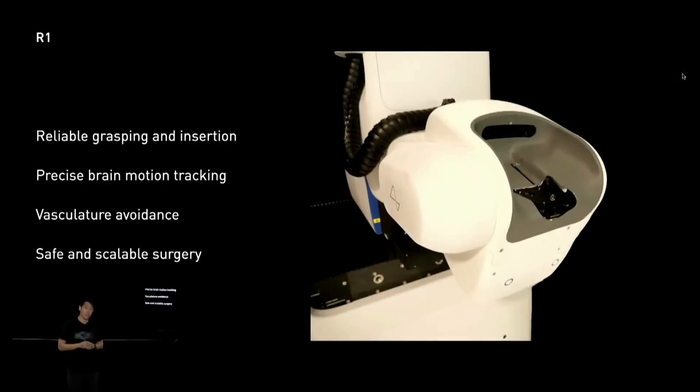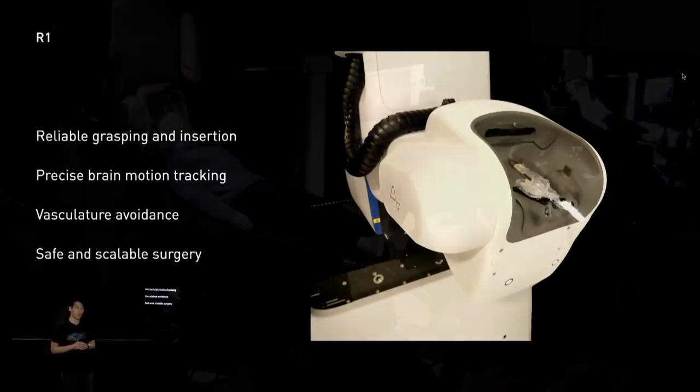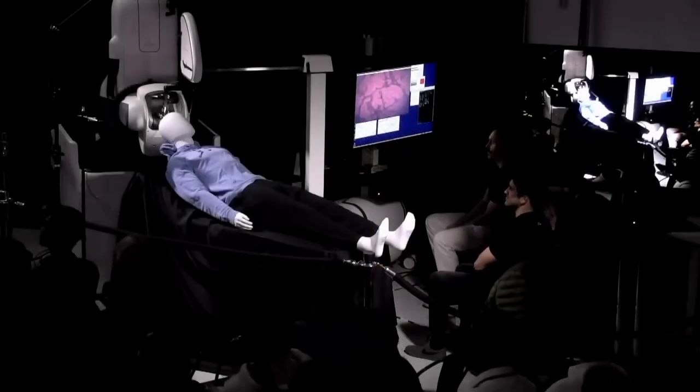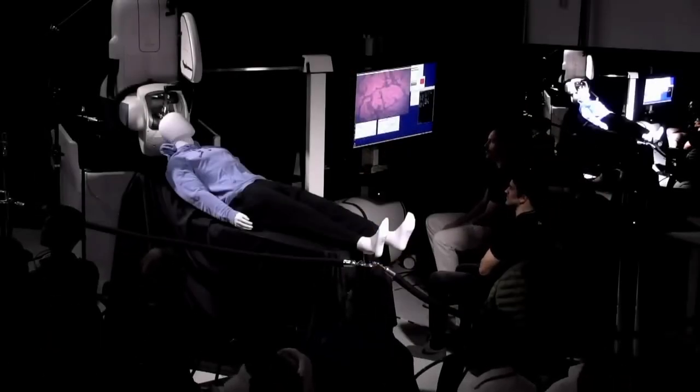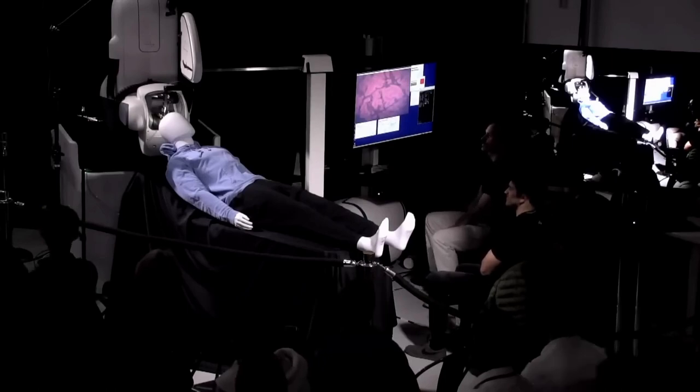For implanting our device safely into the brain, we built a surgical robot that we call the R1 robot. So here it is. That's our R1 robot with our patient alpha who is lying comfortably on the patient bed. This is what we call the targeting view. What you're seeing is a picture of our brain proxy and the pink represents the cortical surface that we want to insert our electrodes into and the black represents the vasculature that we want to avoid.